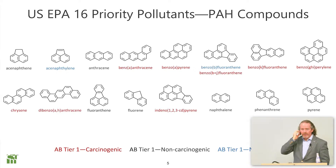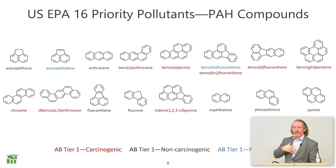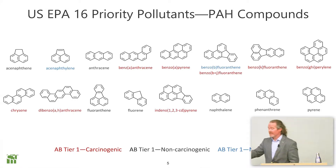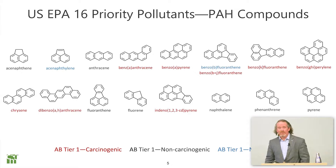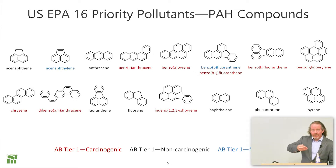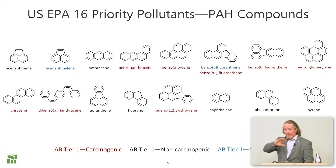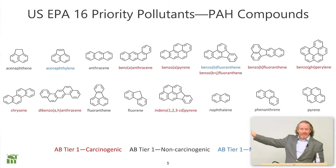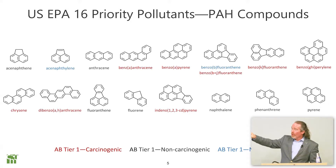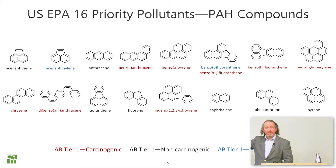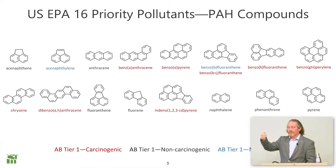People get intimidated by this because a lot of people hated chemistry in school. When they start talking about benzo-K-florentine or benzo-GHI-pirline, their eyes glaze over and they want out. Don't get intimidated by that — they're just silly names that chemists put together to identify these things. You don't need to know them; you need to know about them and what they are.